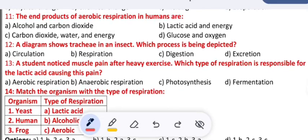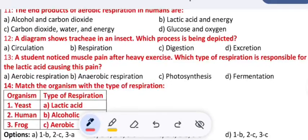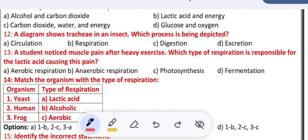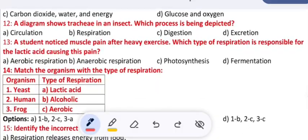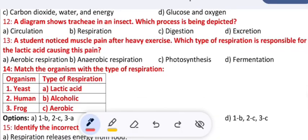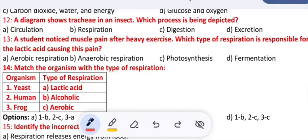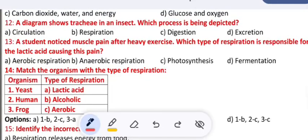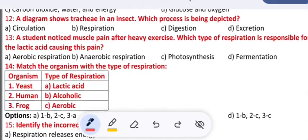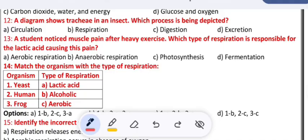The end product of aerobic respiration in humans are: A) alcohol and carbon dioxide, B) lactic acid and energy, C) carbon dioxide, water and energy, D) glucose and oxygen. A diagram shows trachea in an insect. Which process is being depicted? Circulation, respiration, digestion, excretion. So the correct answer you can select and write in the space provided for it.